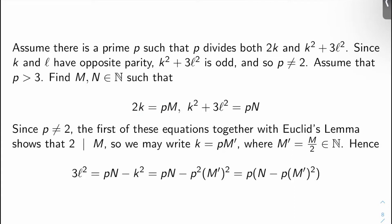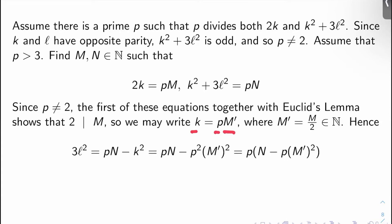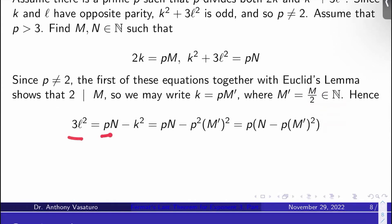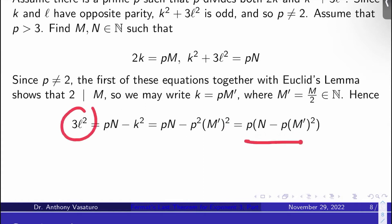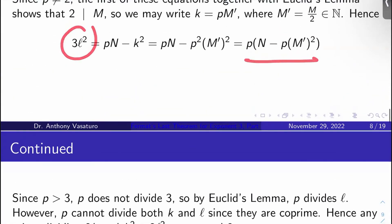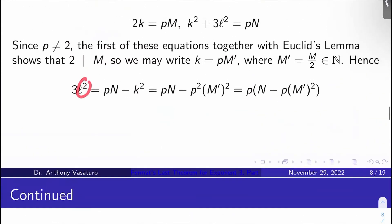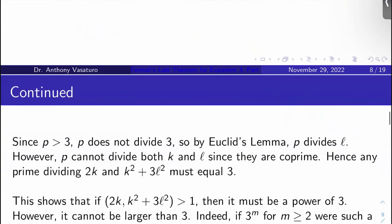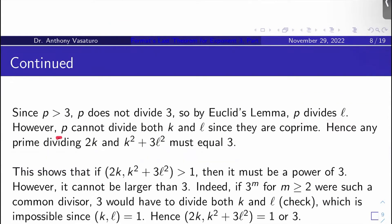Find natural numbers M and N such that 2K equals PM and K squared plus 3L squared equals PN. Since P isn't 2, Euclid's lemma shows 2 divides M, so we can write K equals P times M prime where M prime equals M over 2. Then 3L squared equals PN minus K squared equals P times (N minus P times M prime squared). Since P is bigger than 3, P doesn't divide 3, so by Euclid's lemma P divides L squared, hence L. But P divides both K and L, contradicting that K and L are co-prime.